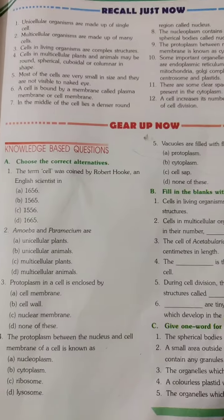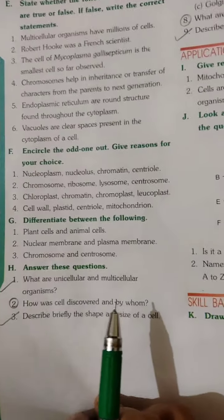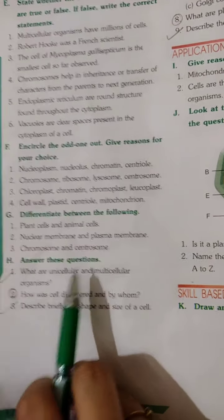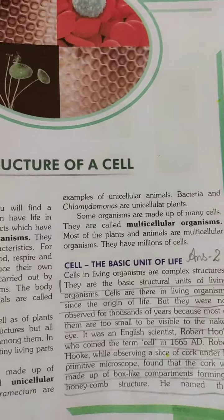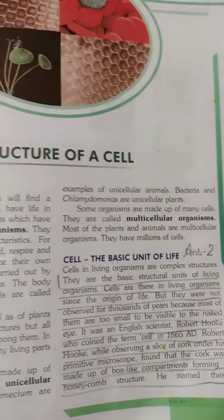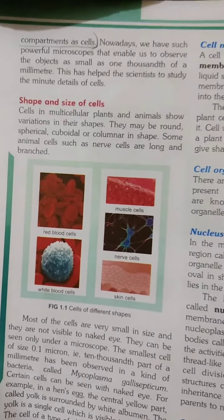We will write question answers. Children, hope you have completed your book exercises. In the question answers section, there are 9 questions given in your book, but you will write only 6 questions in your copy. The rest 3 questions you will mark the answers in your book only and learn them from the book — you will not write those 3 questions in your copy. See how was the cell discovered and by whom — this answer number 2 is given on page number 7, the very first page of the chapter. From there, cells are the basic structure of life.